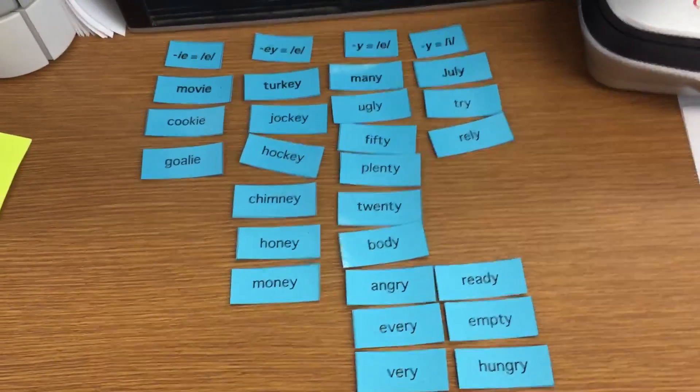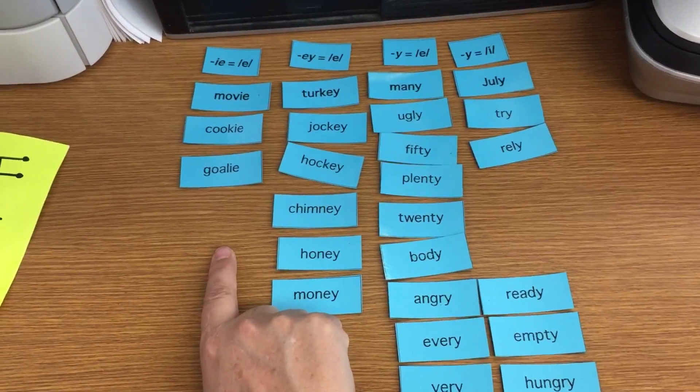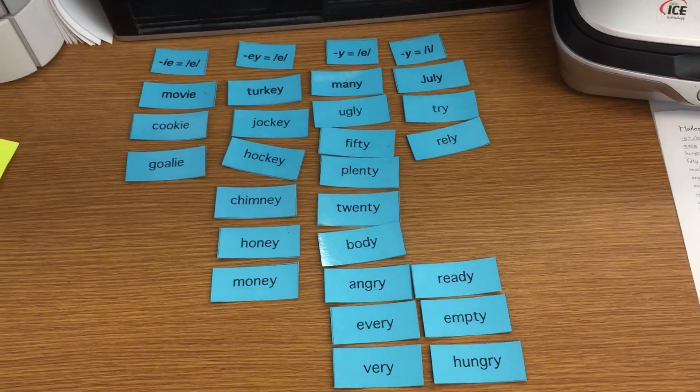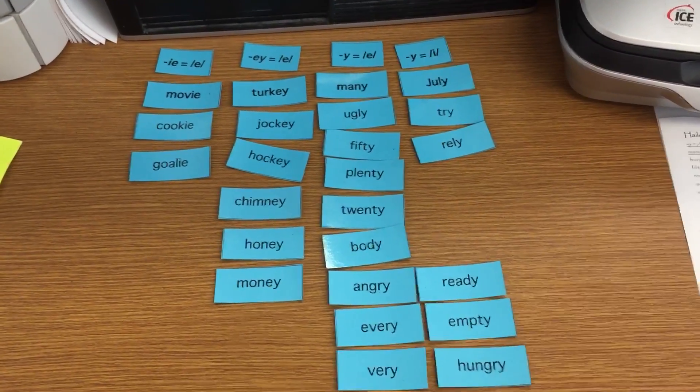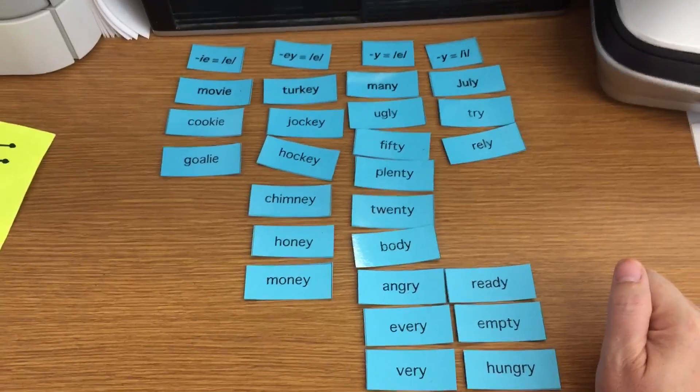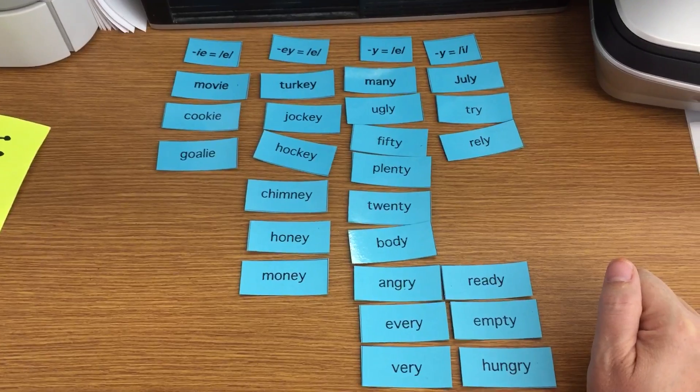So you don't have any oddballs this week. You have some IEs that have the E sound, EYs that have the E sound, lots of the E ending sound with just a Y, and then some I ending sounds. So go ahead and hit pause and make sure you sorted yours this way.